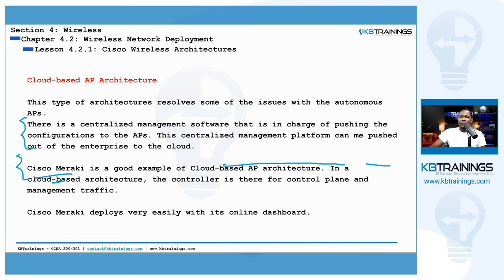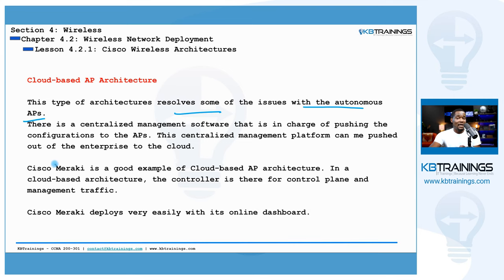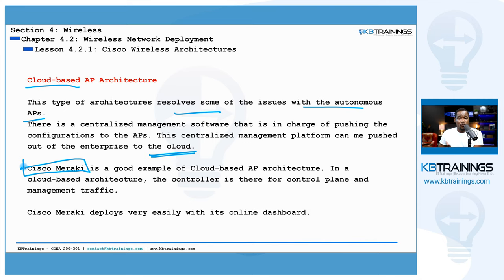Now we're going to talk about the cloud-based AP architecture, which resolves some of the issues with autonomous APs. Here you have centralized management software, but this software is not on-site — it's in the cloud. A good example is Cisco Meraki. You create an account, buy Meraki devices and licenses, and when you deploy your network, all configurations are saved in the cloud on the Meraki dashboard. You connect the AP to the network, give it internet access, and the AP connects to the server, pulls the configuration, and starts using it. You can have thousands of APs working that way.